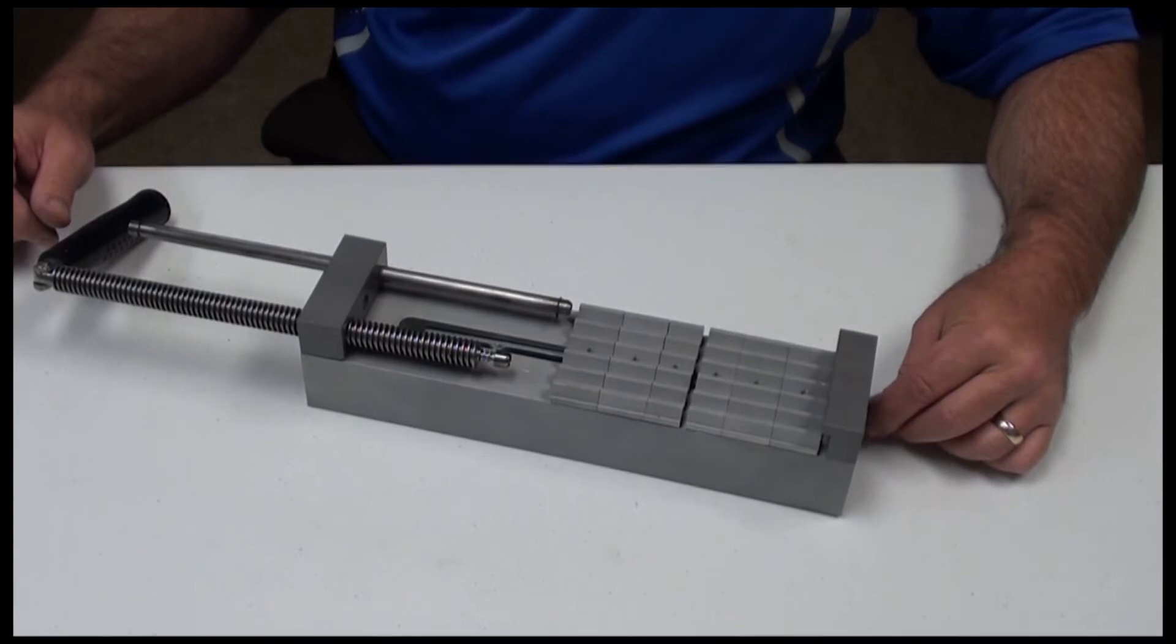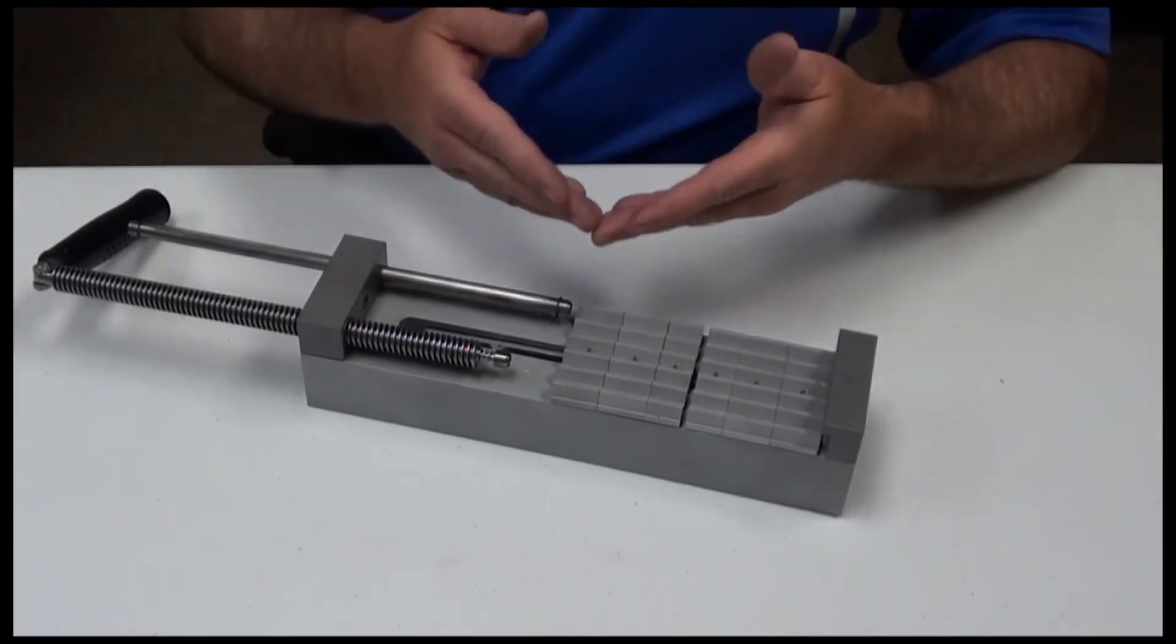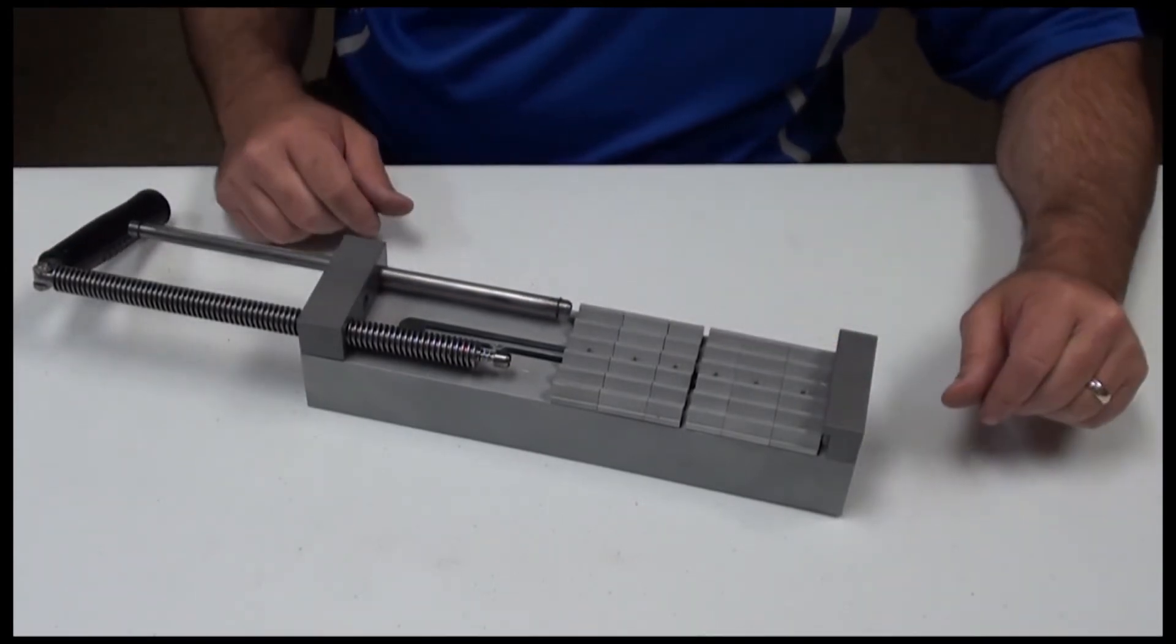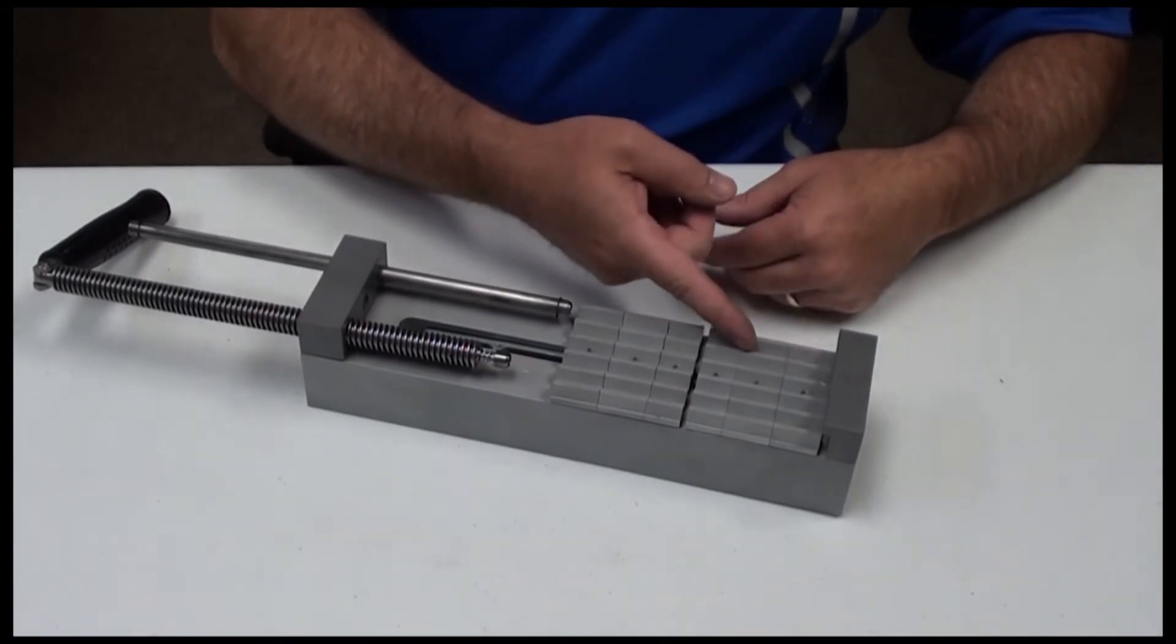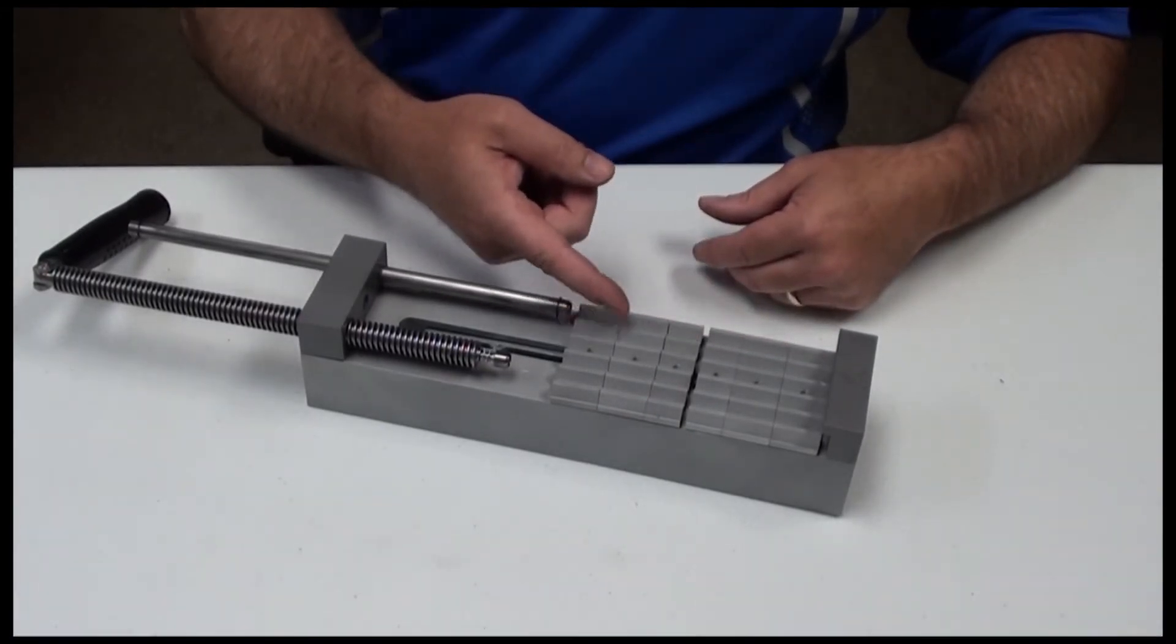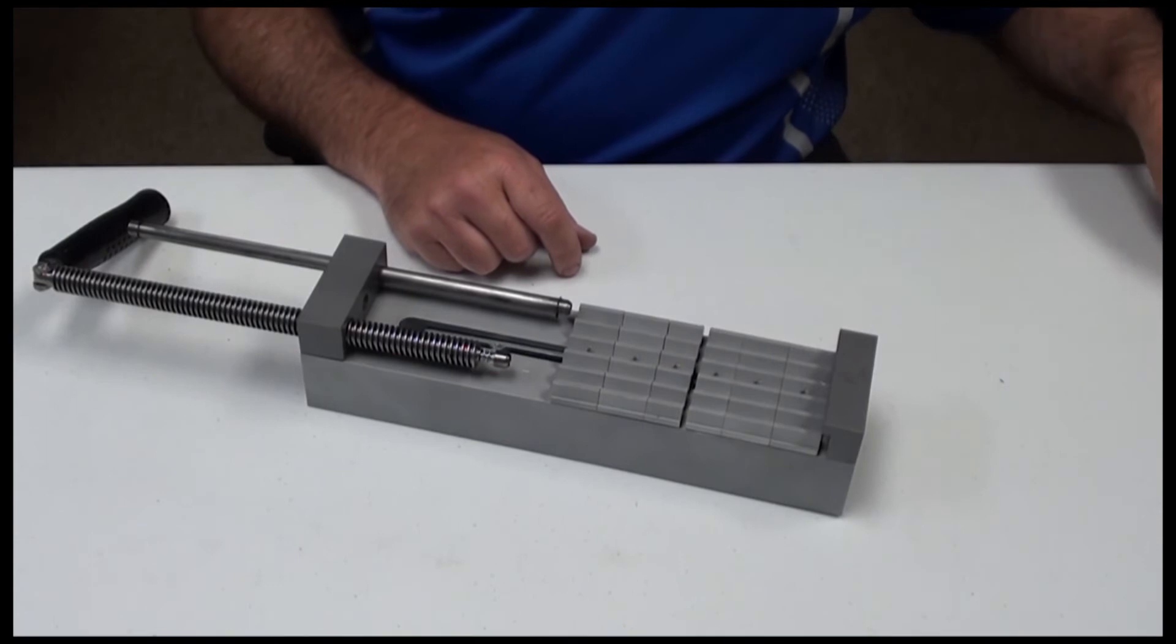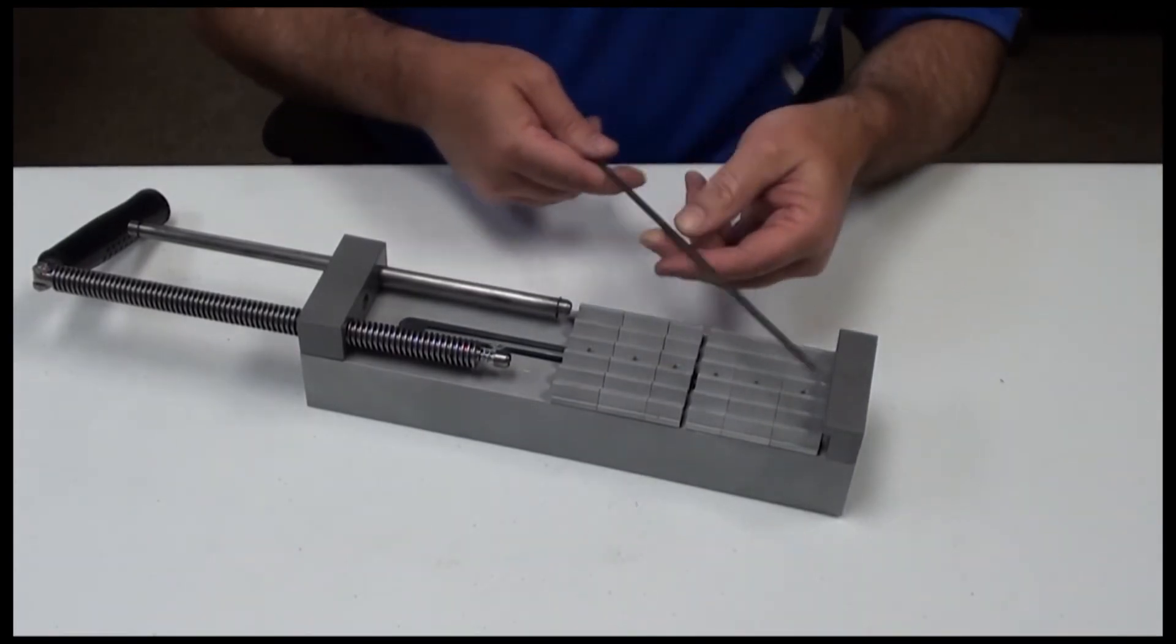When you purchase an RKO tool you'll receive the RKO tool assembly, one or more tooth guide blocks to match the chain or chains you will connect or disconnect, and a tapered assembly pin.